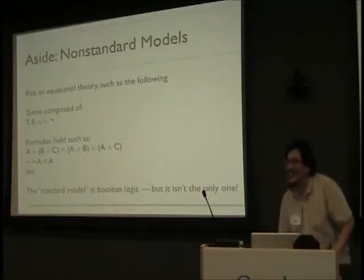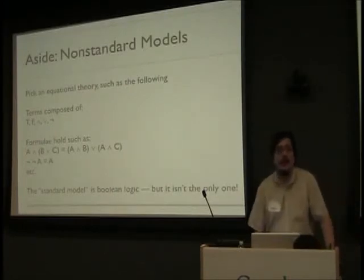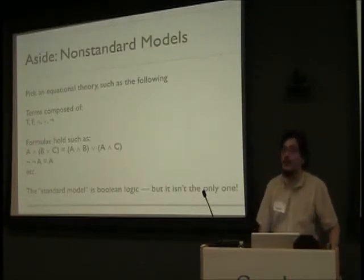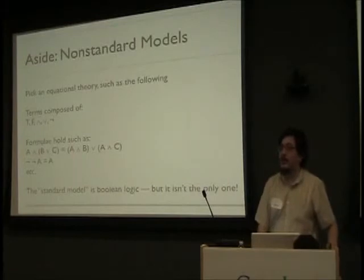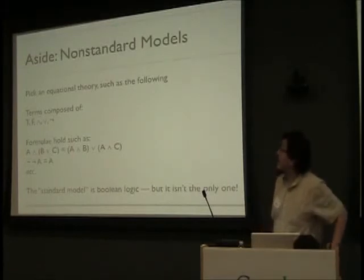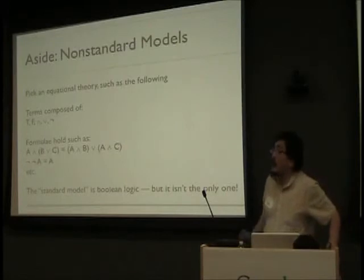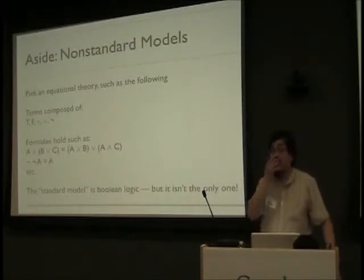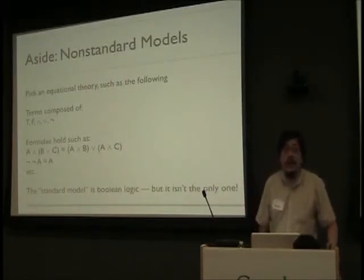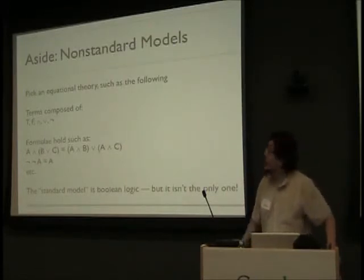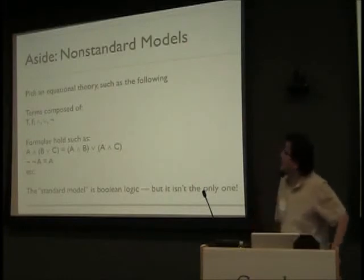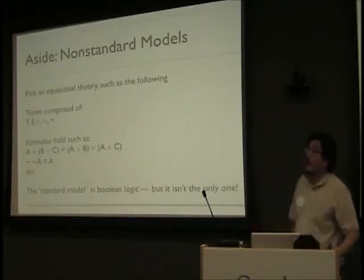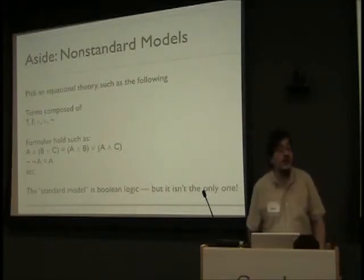The groupoid interpretation was very important. Now the problem is I'm not going to talk about homotopy theory at all, because I don't have time to introduce it. So I can't talk about what it means for a type to be a space, really. But I can just talk about, in a general sense, what we're doing here and why it's a different notion of interpretation.